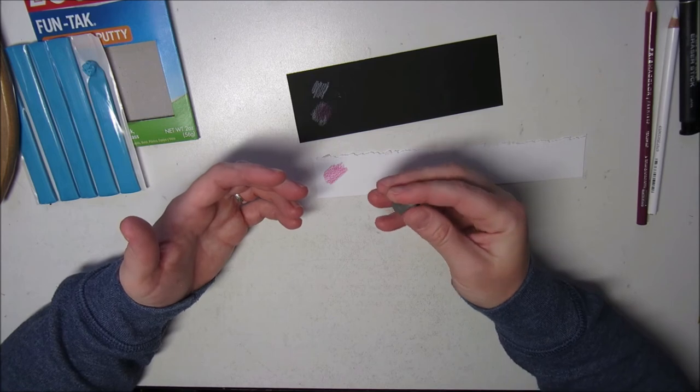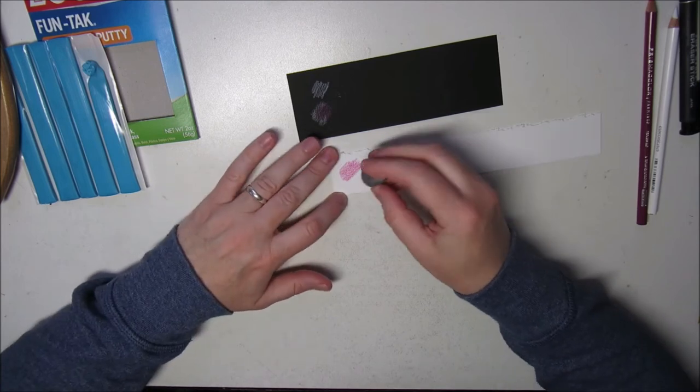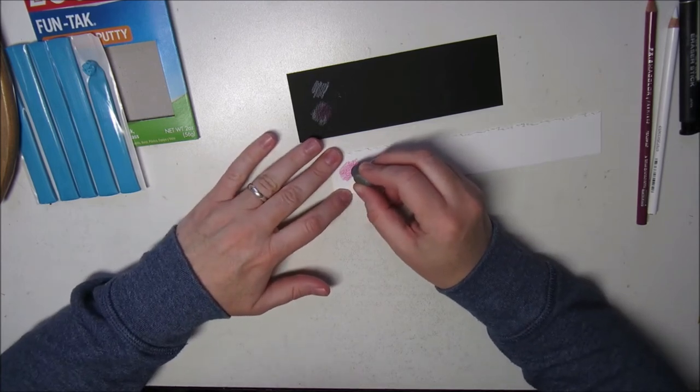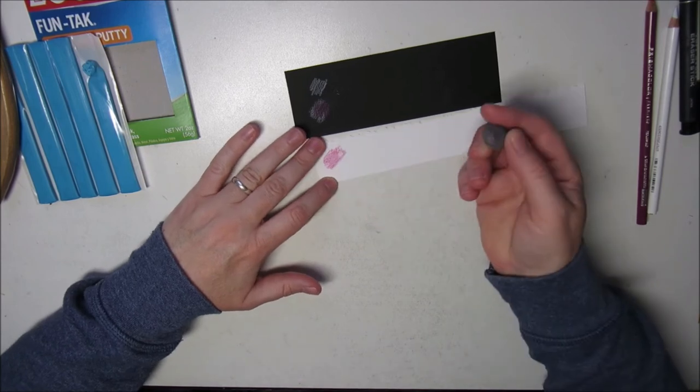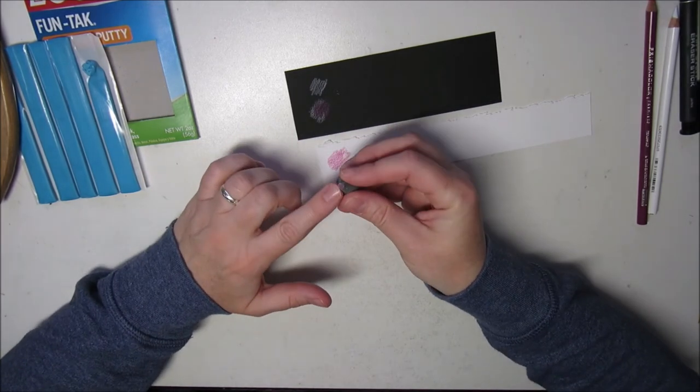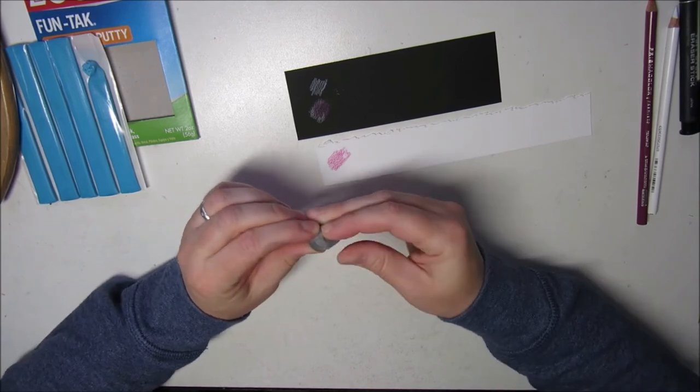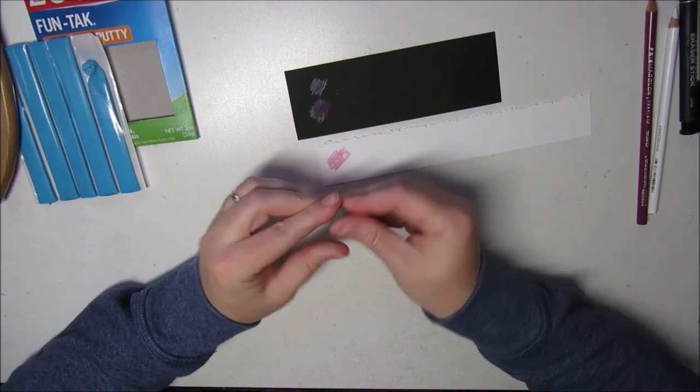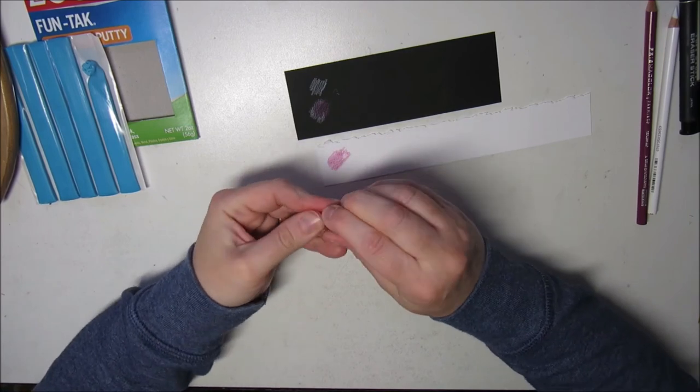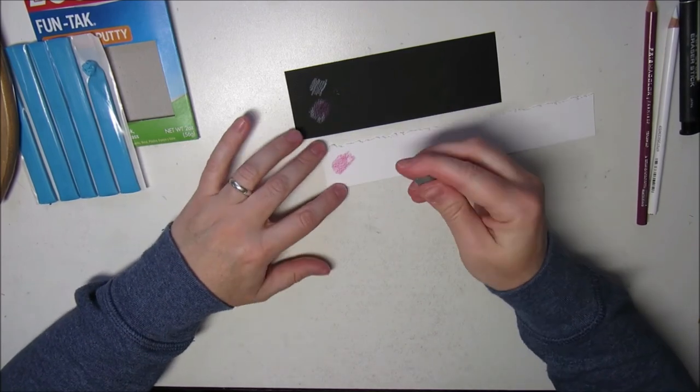So if you want to remove just a little bit of color, just dab it. So you shape it and you dab it and you see how it removed it. It's just going to push it into itself.